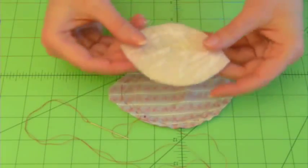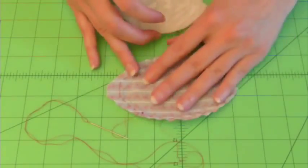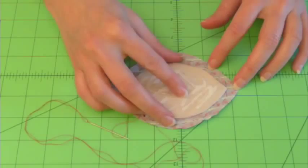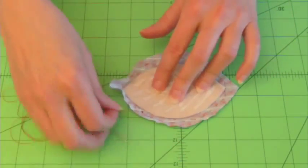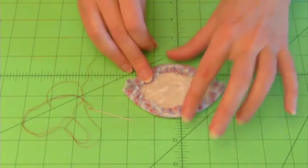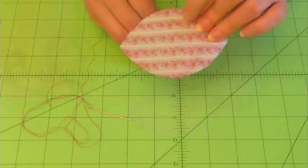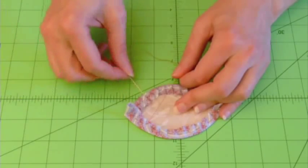Here is the template piece with the batting glued to it. I have my fabric with the right side facing downward, and I'm going to place the batting side of this template against the fabric. Now, I'm going to take the end of my thread and I'm going to pull it. Look at how nicely that gathers the fabric up around the template.